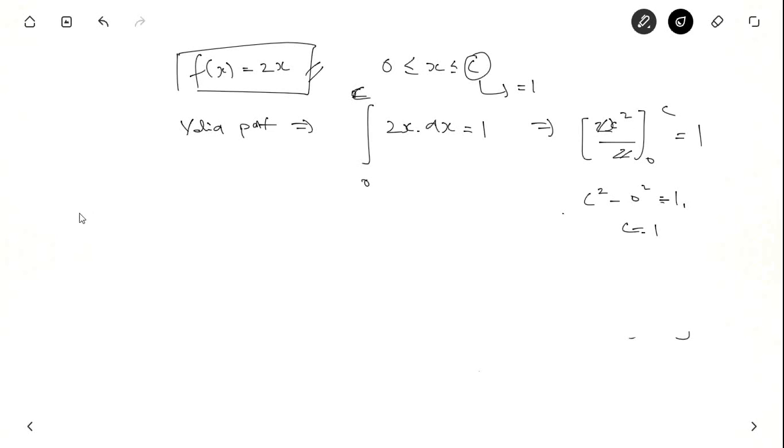Let us say someone is interested in finding out the probability that half less than x less than or equal to 1. It lies between half to 1, the x value. If we draw a graph between f of x and x, so that density function says f of x equal to 2x. So, we are interested in knowing the value half to 1. x cannot be greater than c, which is 1. So, we are interested in knowing this area.